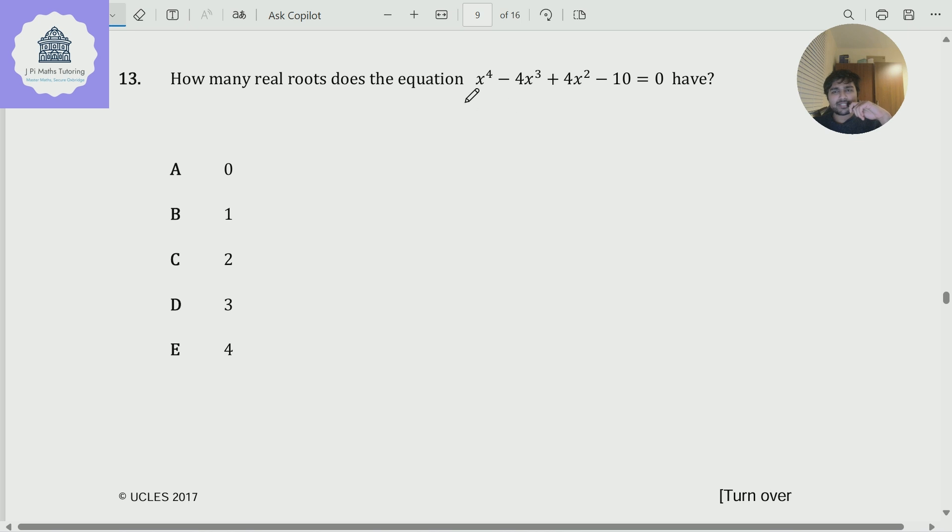How many real roots does the equation x to the 4 minus 4x cubed plus 4x squared minus 10 equals 0 have? Is it 0, 1, 2, 3, or 4?